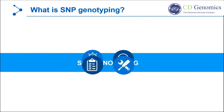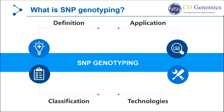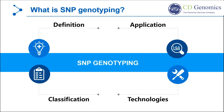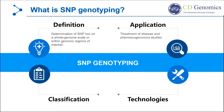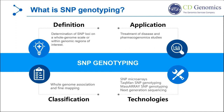SNP genotyping refers to the determination of SNP loci on a whole genome scale, or within genomic regions of interest. The major applications of SNP genotyping are in disease treatment and pharmacogenomics studies. According to research purpose, SNP genotyping can be divided into two categories: whole genome association (WGA) and fine mapping. The common platforms for SNP genotyping include SNP microarrays, TaqMan SNP genotyping, MassArray SNP genotyping, and NGS.